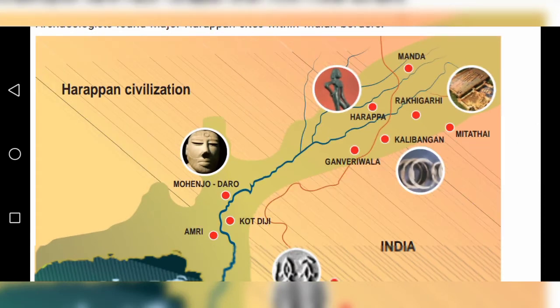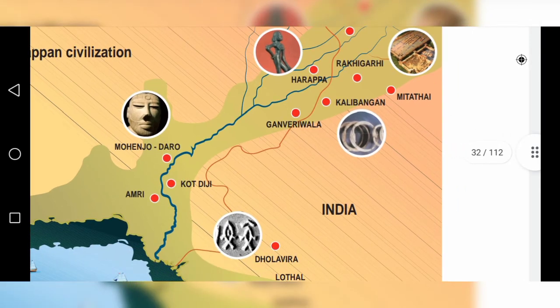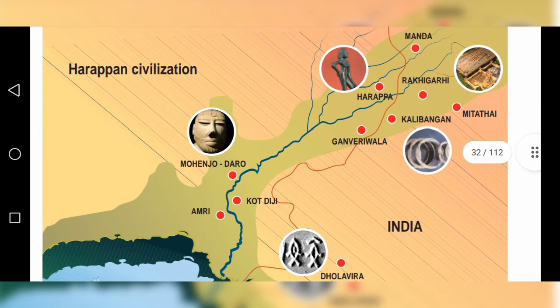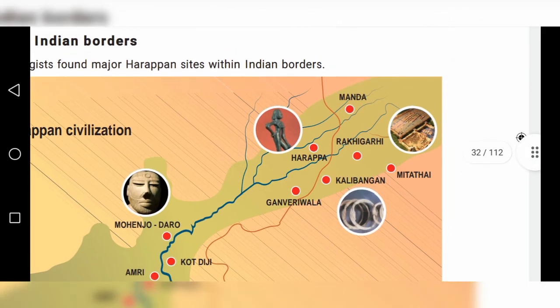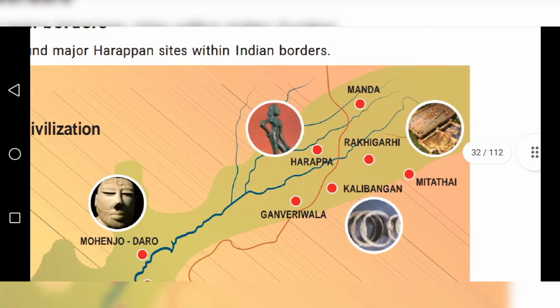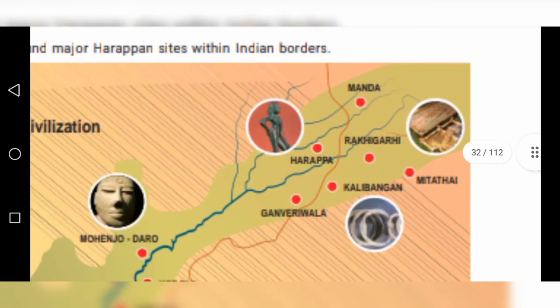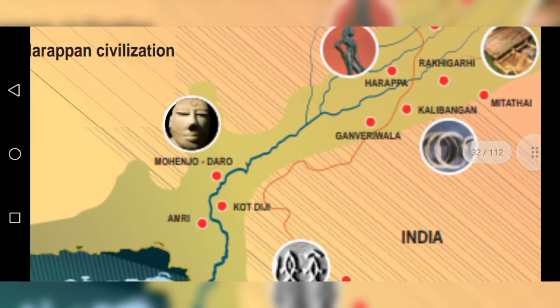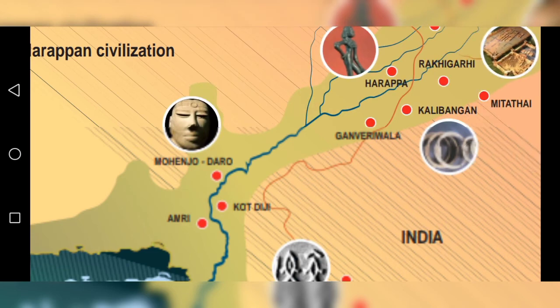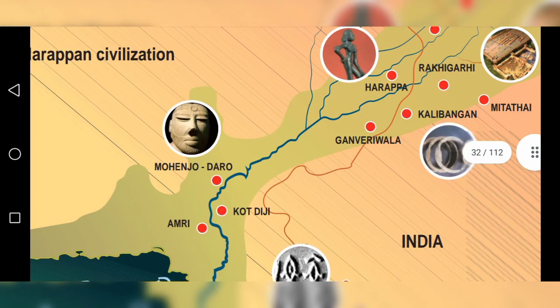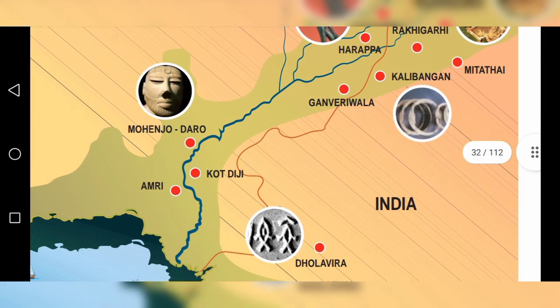Archaeologists found major Harappan cities within India's borders. On the map we can see Mohenjo-daro and Harappa. These two cities are part of the larger Harappan civilization.